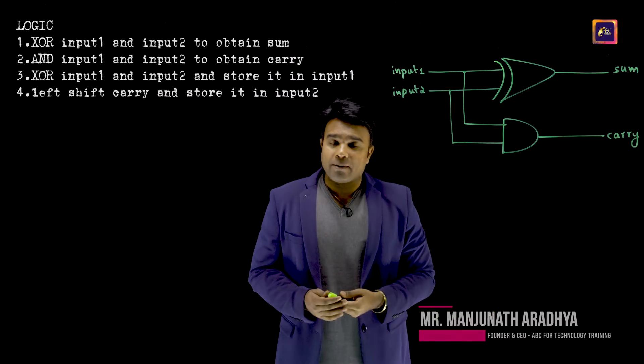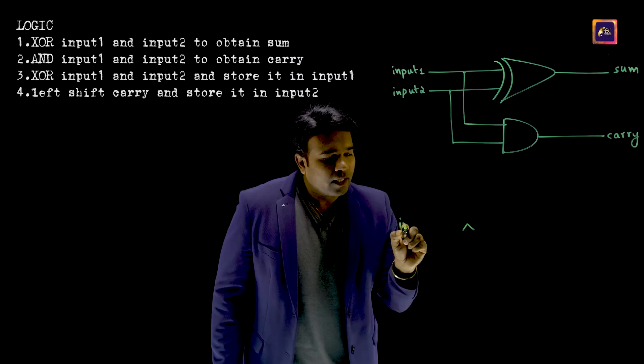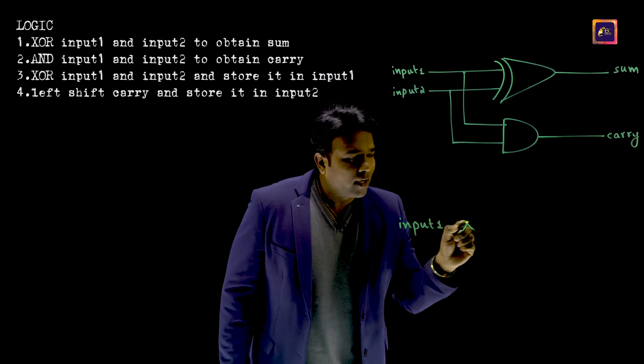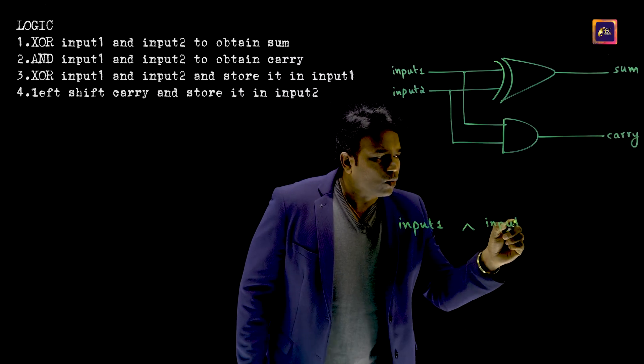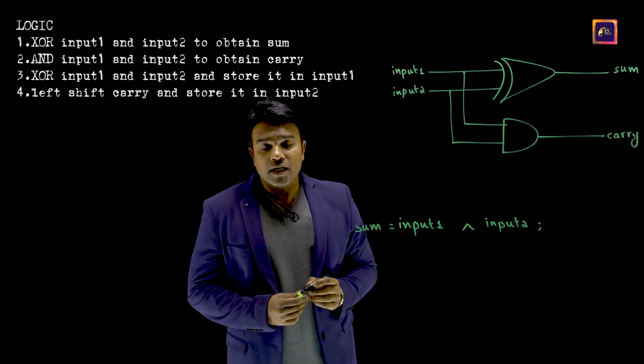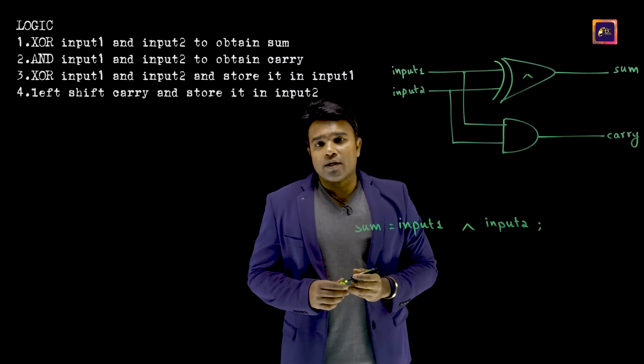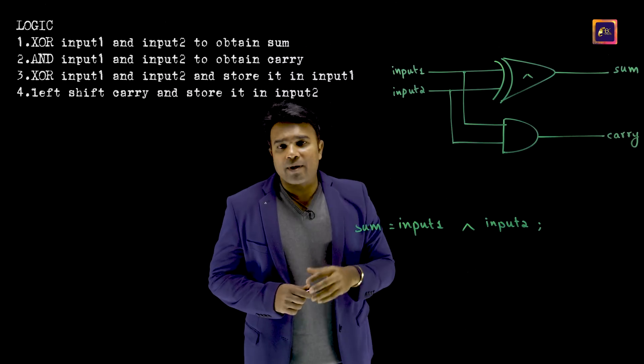But how do we do that in programming? This is the way that I would do the XOR between input 1 and input 2 and I am going to obtain the sum. Let me tell you, this is the symbol to use the XOR operation in a programming language.